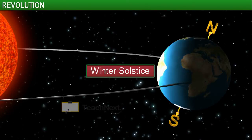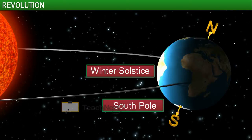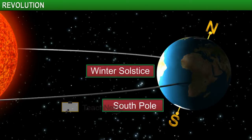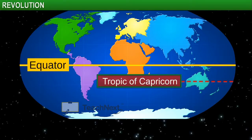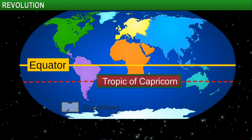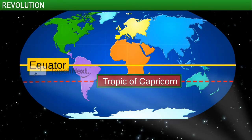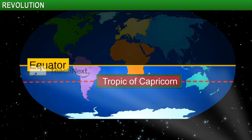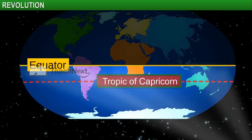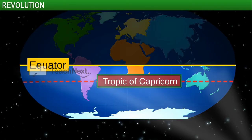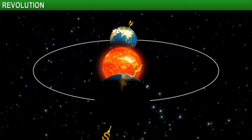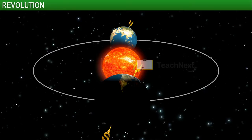During the winter solstice, the south pole is tilted towards the Sun. This area is the Tropic of Capricorn, which receives direct sunlight, and hence it is summer in the southern hemisphere. As you can guess, the northern hemisphere has less sunlight during this time.